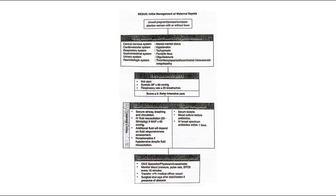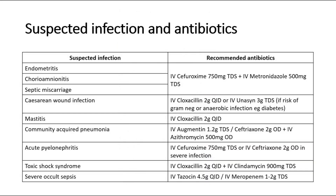There are different antibiotics recommended for different infections. For endometritis, chorioamnionitis, and septic miscarriage, give IV cefuroxime 750 mg and IV metronidazole 500 mg. For caesarean wound infection, give IV cloxacillin or IV augmentin. For mastitis, give IV cloxacillin. For community-acquired pneumonia, give IV augmentin or ceftriaxone. For acute pyelonephritis, give IV cefuroxime or ceftriaxone. For toxic shock syndrome, give IV cloxacillin and clindamycin. And for severe occult sepsis, give tazocin or meropenem.